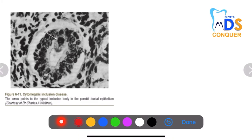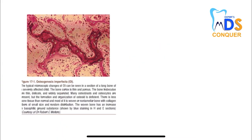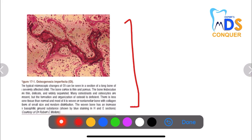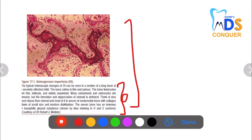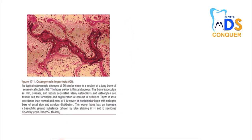The owl eye appearance is seen with cytomegalovirus, where arrows point to typical inclusion bodies. Next, osteogenesis imperfecta: the bony cortex is thin and porous, trabeculae are thin, delicate, and widely separated, and many osteoblasts and osteocytes are present, but formation and organization of osteoid is deficient. There is less bone matrix than normal, mostly woven and non-lamellar bone with collagen fibers of small size and random distribution.